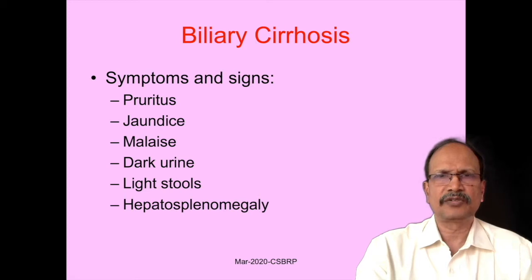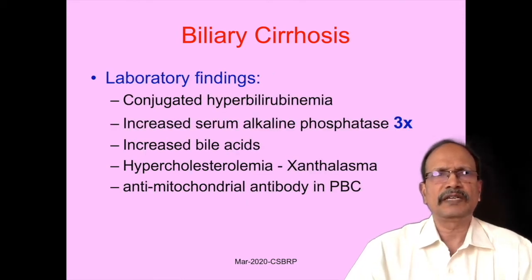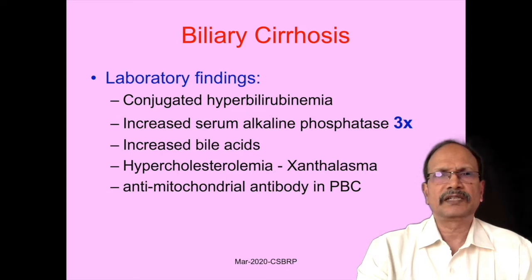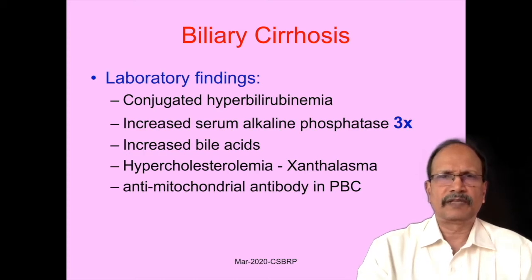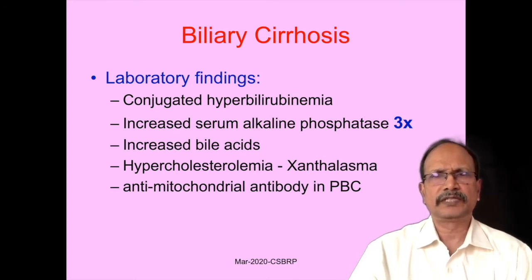There may be associated hepatomegaly. If you recollect the classical cirrhosis, wherein you will find a shrunken, nodular liver — here in biliary cirrhosis, even though there is fibrosis, contrary to the expectation, the liver may be enlarged. Hepatomegaly may be present in biliary cirrhosis. Laboratory findings: this is an example of conjugated hyperbilirubinemia. One marker of biliary cirrhosis is that it is of obstructive type, so the person suffers from increased concentrations of serum alkaline phosphatase, which is usually three times the upper limit of normal, and increased bile acids can be appreciated in the serum. Hypercholesterolemia and deposition of this cholesterol in the subcutaneous or dermal layer is known as xanthelasma.